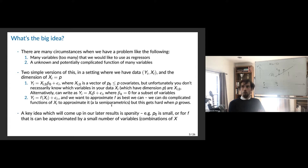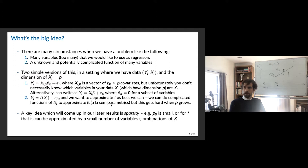Setting number one is we have an unknown and potentially complicated function of many variables. Imagine we have data y and covariates x with dimension p, and there could be a linear model where yi equals xi-zero beta-zero, where xi of the true model is some subset of the covariates. Unfortunately, you don't know which variables in your data are the right ones. You can throw 100 things on the right-hand side, but really only 10 of them are predictive. Some beta k are going to be zero — it's a model selection problem.